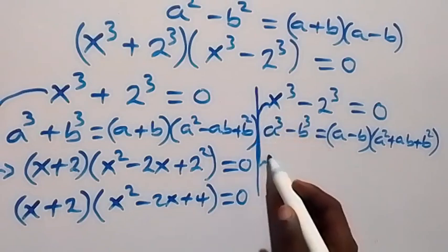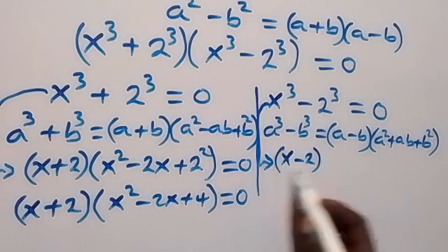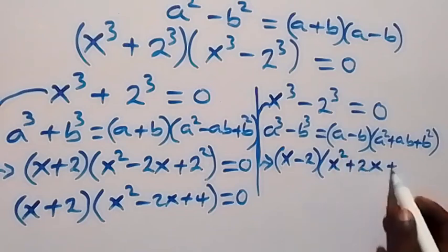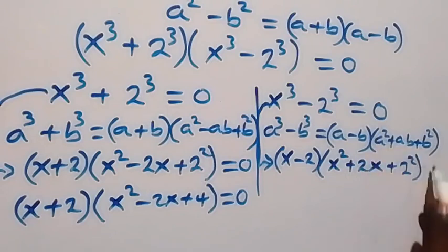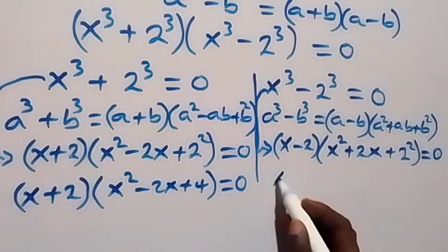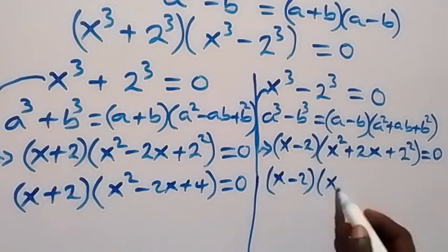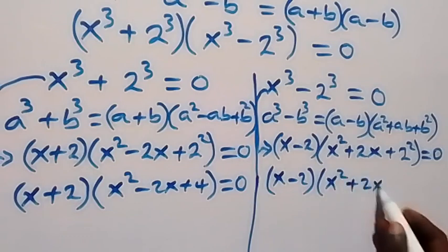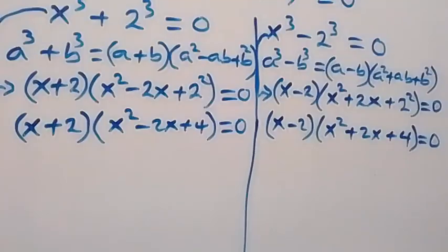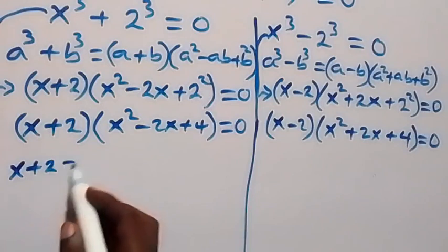And for the second case, applying the difference of cubes — a cubed minus b cubed equals a minus b times a squared plus ab plus b squared — this becomes x minus 2, times x squared plus 2x plus 4, equals to 0.